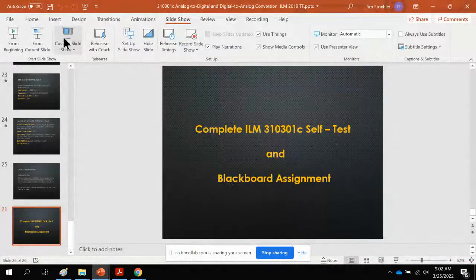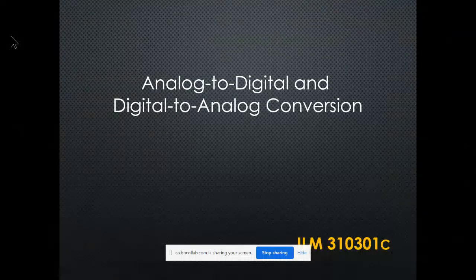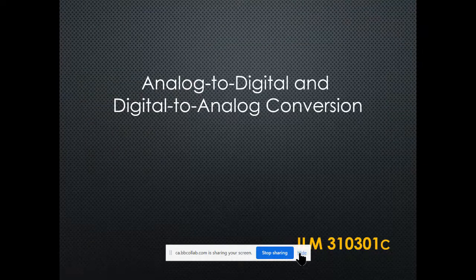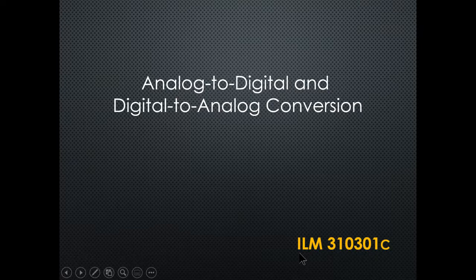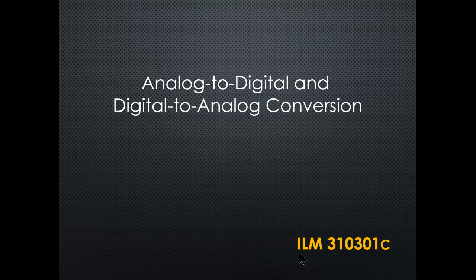We're talking about analog to digital and digital to analog conversions. Most real-life values are analog — things like the level of a tank or process temperatures. All of that is analog and it goes into a transmitter, which could be digital or analog, and there are conversions that have to do an analog to digital conversion.